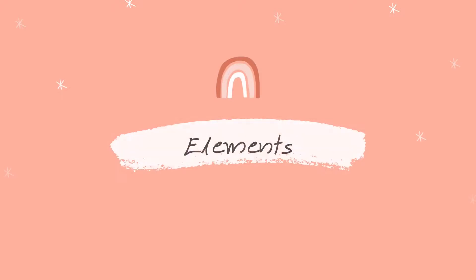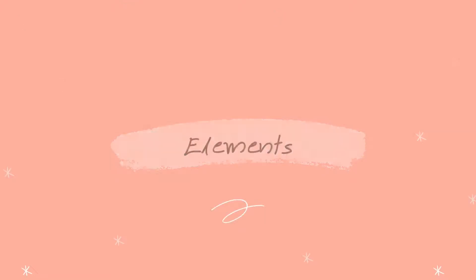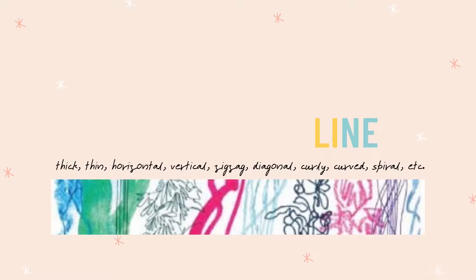Let us first discuss the elements. Line is a mark made using a drawing tool or brush. There are many types of lines. We have thick, thin, horizontal, vertical, zigzag, diagonal, curly, curved, spiral, and more. There are different tools to make different kinds of lines.